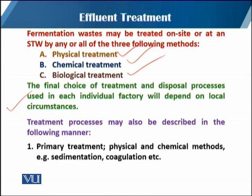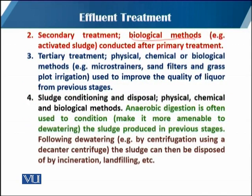The treatment processes may be described as follows. The first is primary treatment, using physical and chemical methods in which sedimentation and coagulation are mostly used. The second is secondary treatment, mostly using biological methods — for example, activated sludge — conducted after primary treatment. The third is tertiary treatment, using physical, chemical, and biological methods such as micro strainers, sand filters, and grass plot irrigation, to further improve the quality of the liquor from the previous stages.